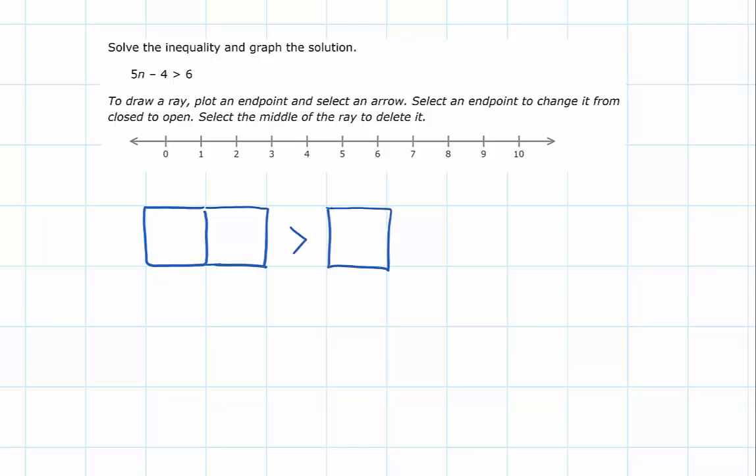So as you can see, I've traced two boxes on the left and one box on the right, and I've put our inequality sign right in the middle. And that's going to allow me to write down my terms. I've got 5n, I've got a negative 4, and on the right side, I've got a positive 6.